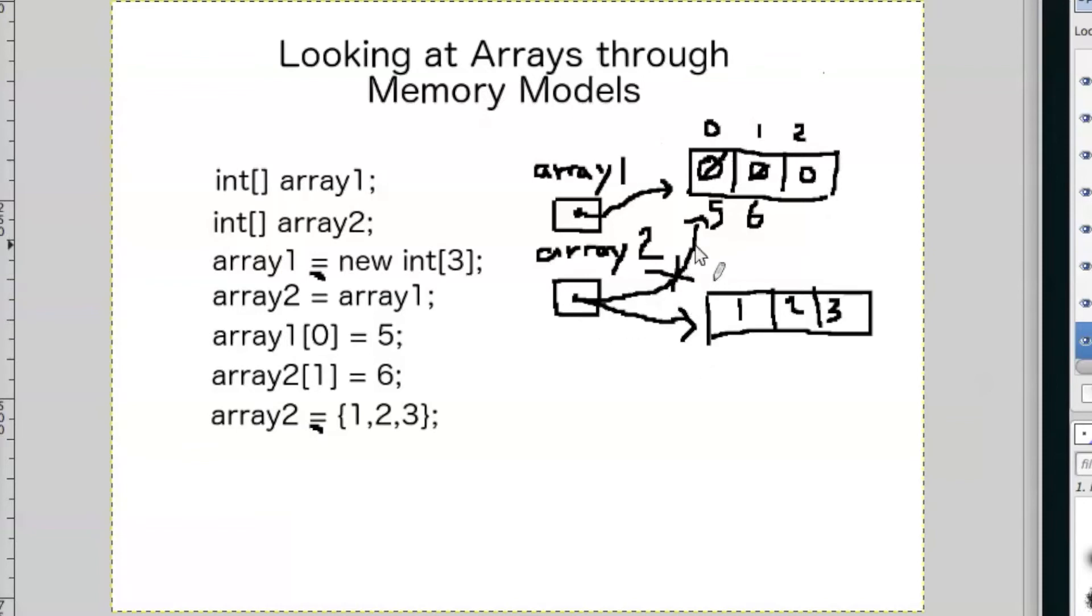So again, this connection right here is lost. But array1 is still pointing to that array. So now when we do system.outprintln with array2 with the first index, it's not going to use this array. It's going to use the new one that we just made it point to. So it would print out a 1.